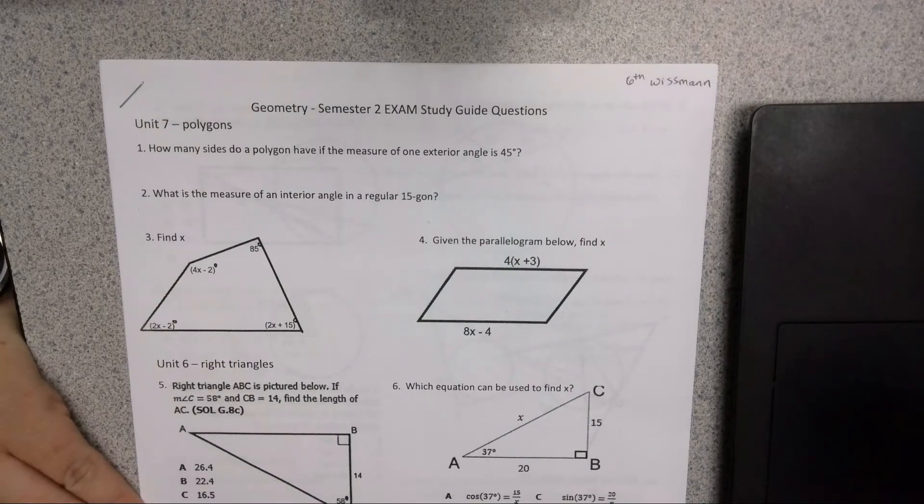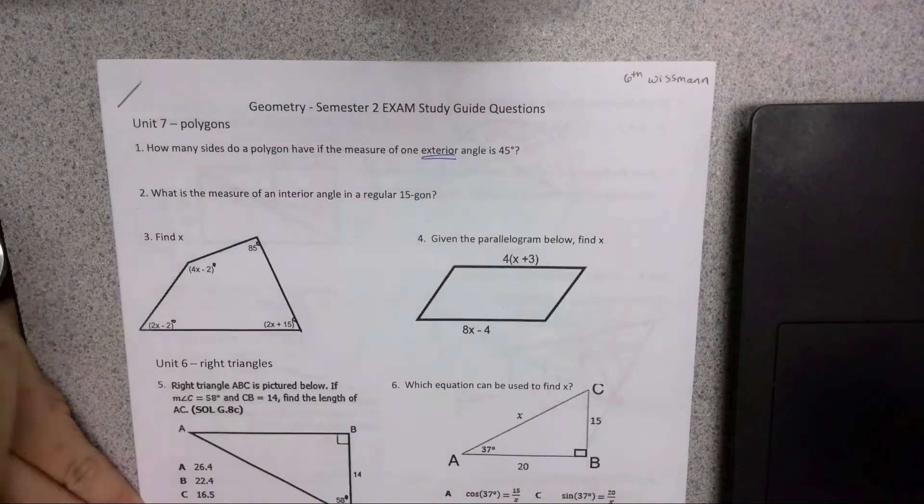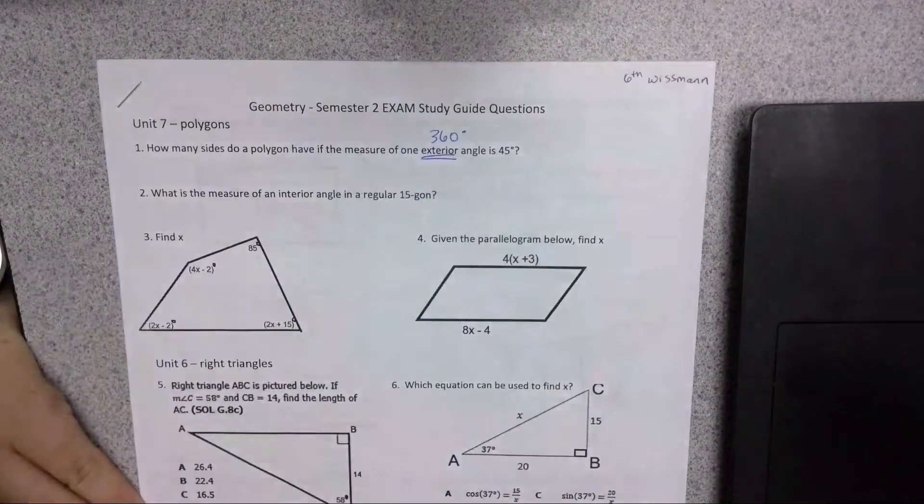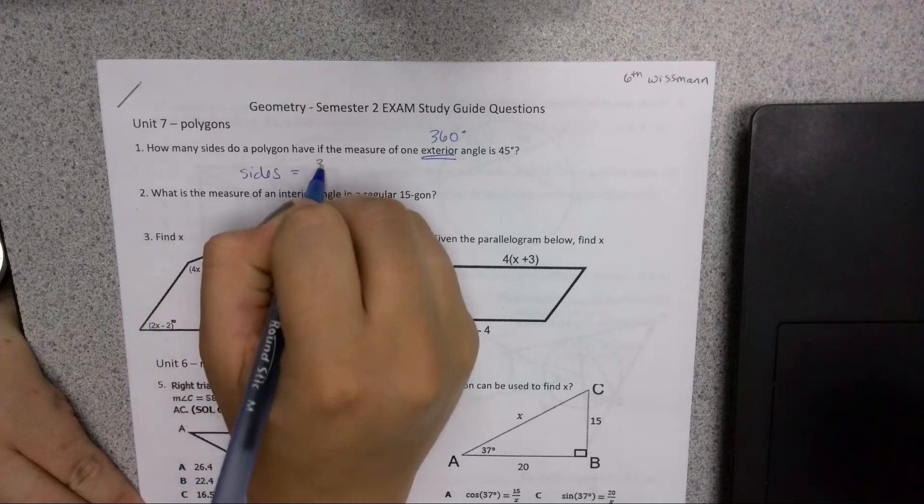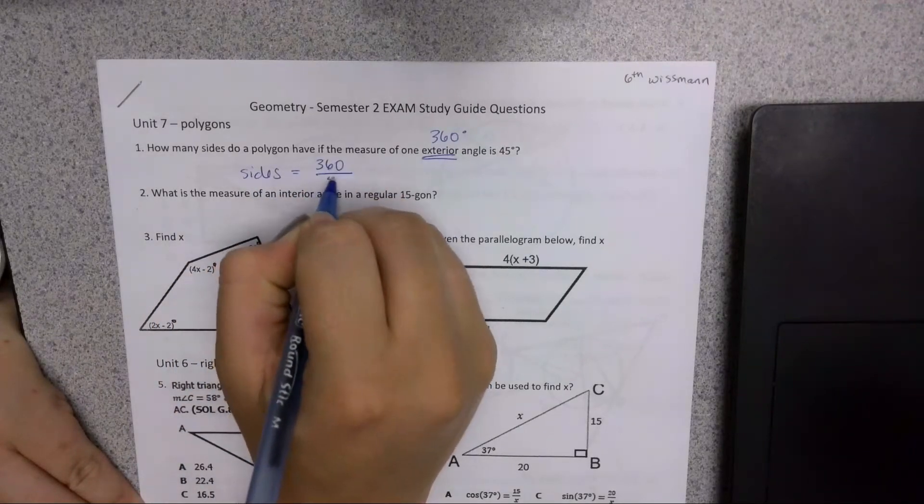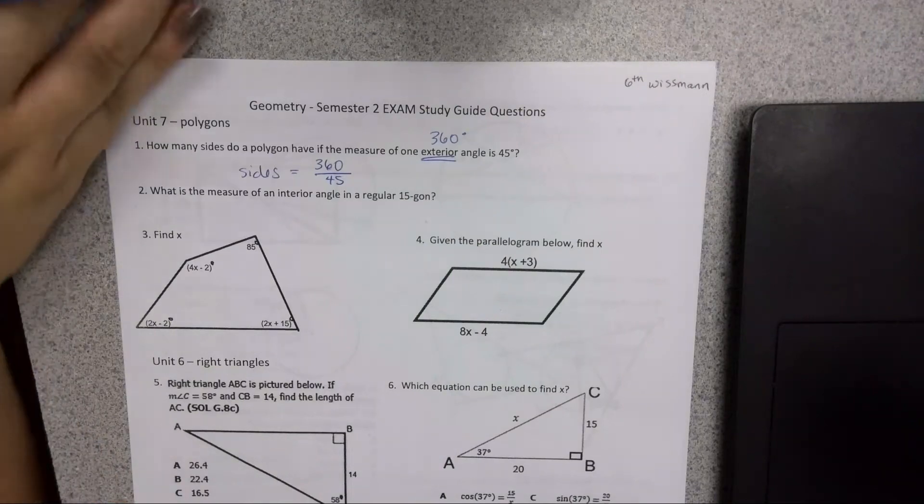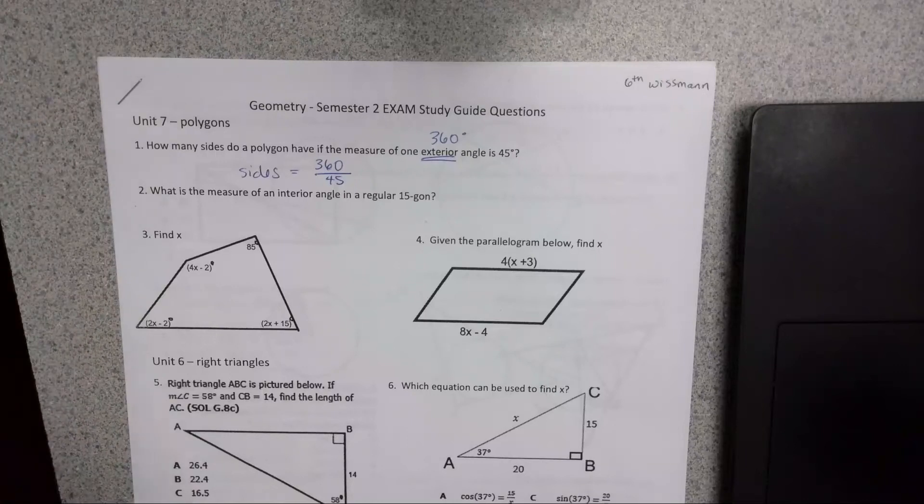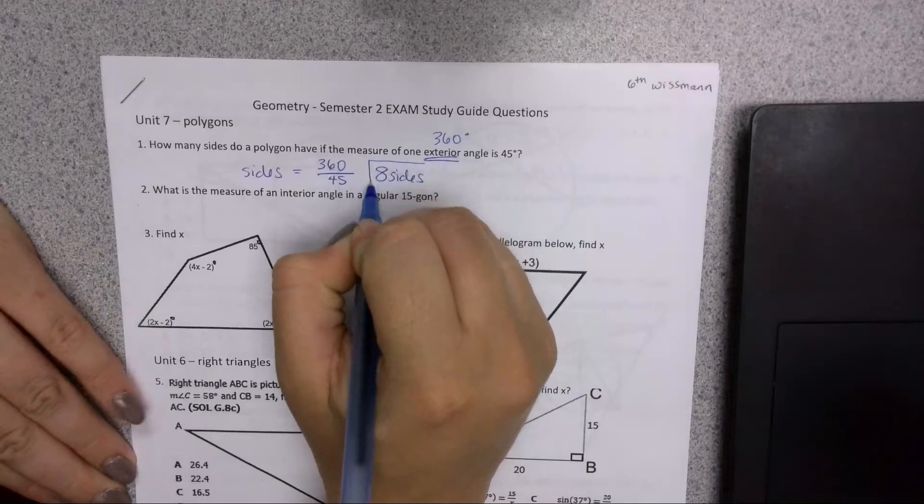How many sides does the polygon have if the measure of each exterior angle is 45? Exterior angles total 360 degrees. So if we want to know how many sides there are, we can take 360 degrees and divide it by the 45 we know each of them is. We're asking the question, how many 45 degree angles are in 360 degrees? There are 8, so there are 8 sides. This is an octagon.